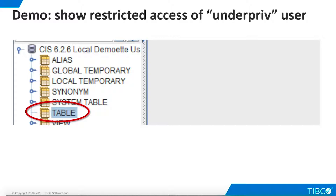Now log into Squirrel again as the user underpriv. This user has neither rights nor privileges, so no published view is visible. This is what we would expect to see since underpriv has no TDV rights, and we have not yet assigned him any privileges for the published resource.